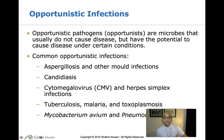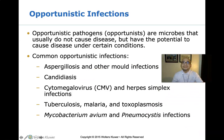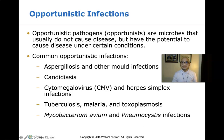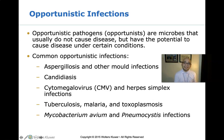Opportunistic pathogens are microbes that usually do not cause disease but have the potential to do so when the host becomes immunocompromised. Common opportunistic infections include aspergillosis and other mold infections, candidiasis causing thrush, cytomegalovirus and herpes simplex infections, tuberculosis, malaria, toxoplasmosis, and among AIDS patients, Mycobacterium avium and Pneumocystis jirovecii infections.